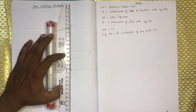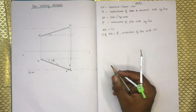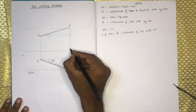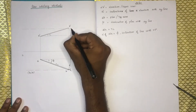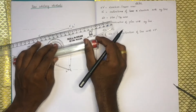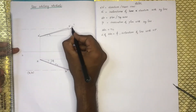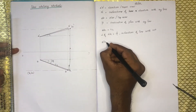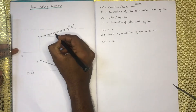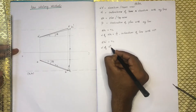We rotate this point. The point is B1 dash. This is B1 dash and A dash. Then A dash B1 dash — we have the inclination of A dash B1 dash.